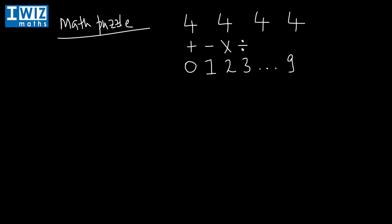So you're meant to get zero, one, two, three, four, five, six, seven, eight, and nine. Let's start with zero.